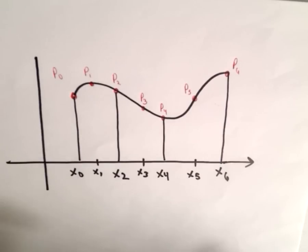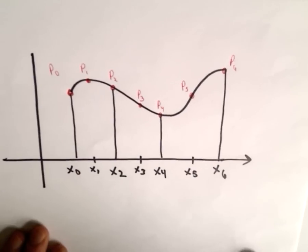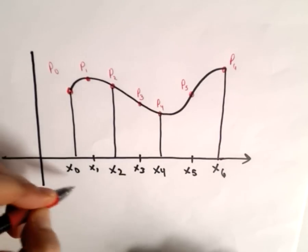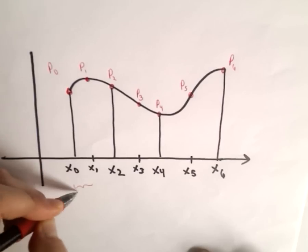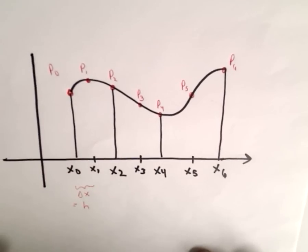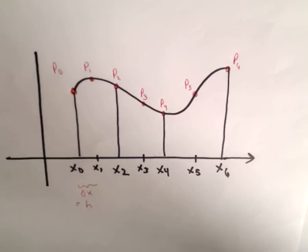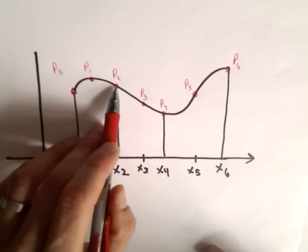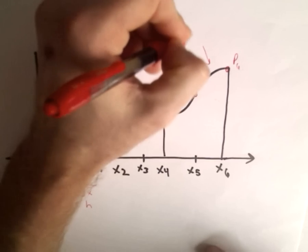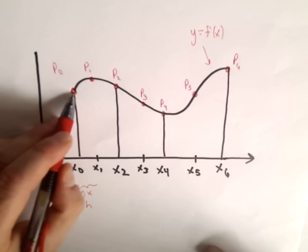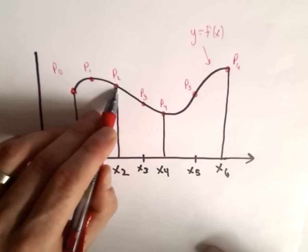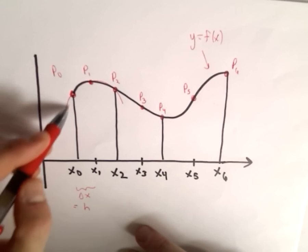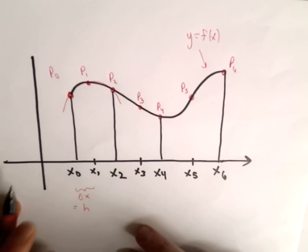What Simpson's Rule does is it uses parabolas. In my example I've used an n value of 6 — n has to be even when you use Simpson's Rule. So I've got the points x₀, x₁, x₂, x₃, x₄, x₅, x₆. The width from x₀ to x₁ is delta x, and we're going to label that as h. The parabola goes through three successive points: x₀, x₁, x₂, with corresponding y values on the curve. Points p₀, p₁, p₂ are on the curve.